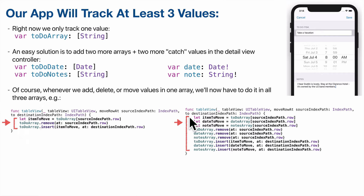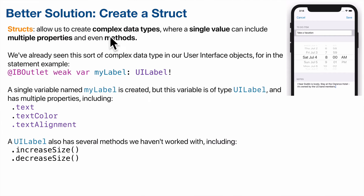If we do this, we'd also have to update every single line where we refer to the to-do array. And in commit editing style where we delete, we'd go from deleting an element in one array to deleting the same index value across three arrays. There is a better way — specifically, we're going to use a struct.